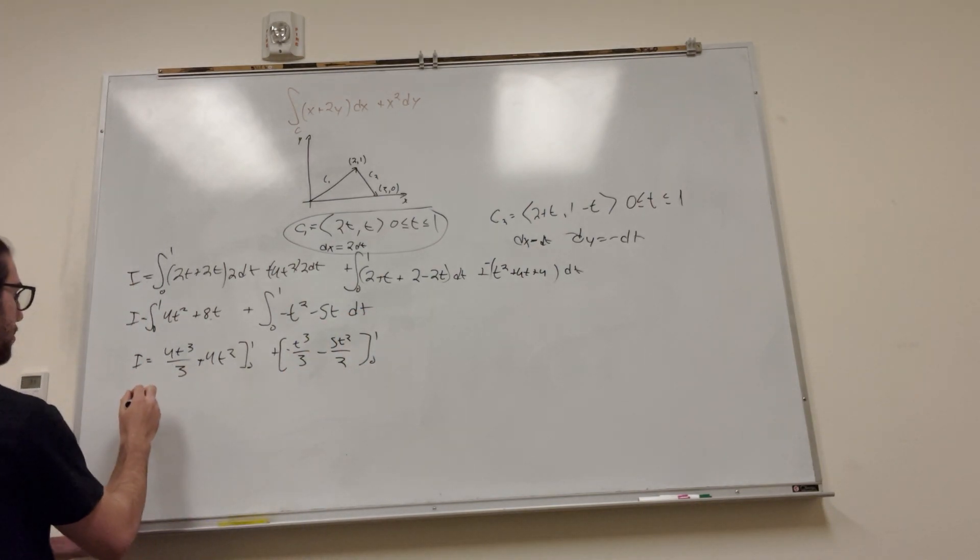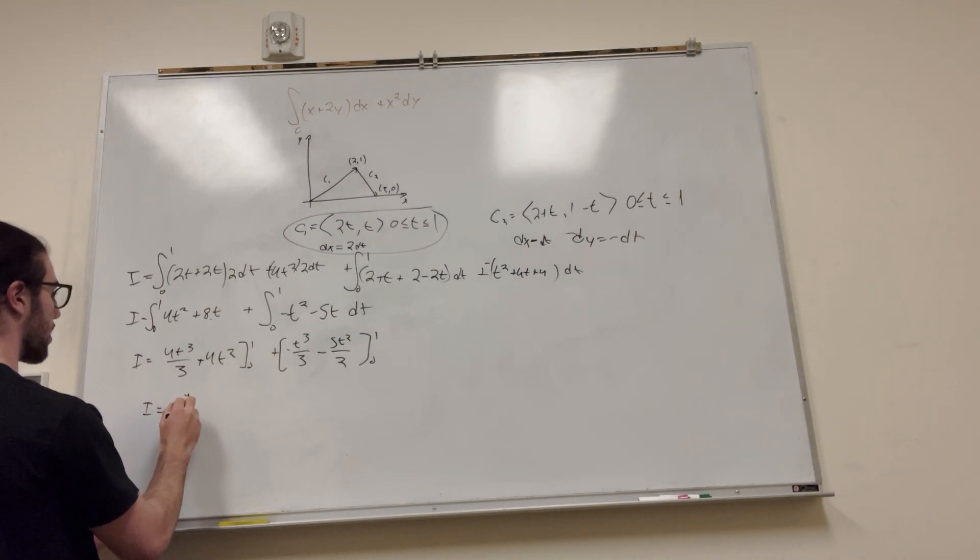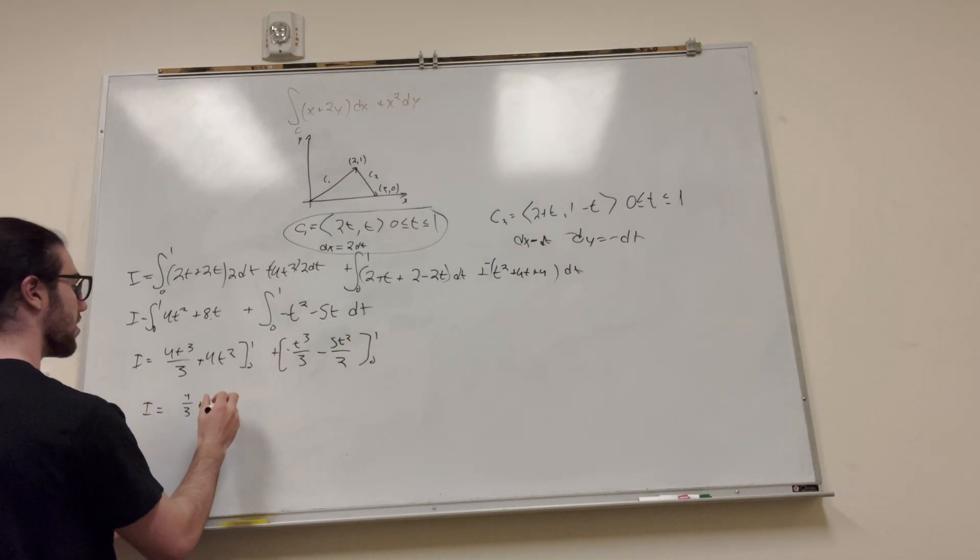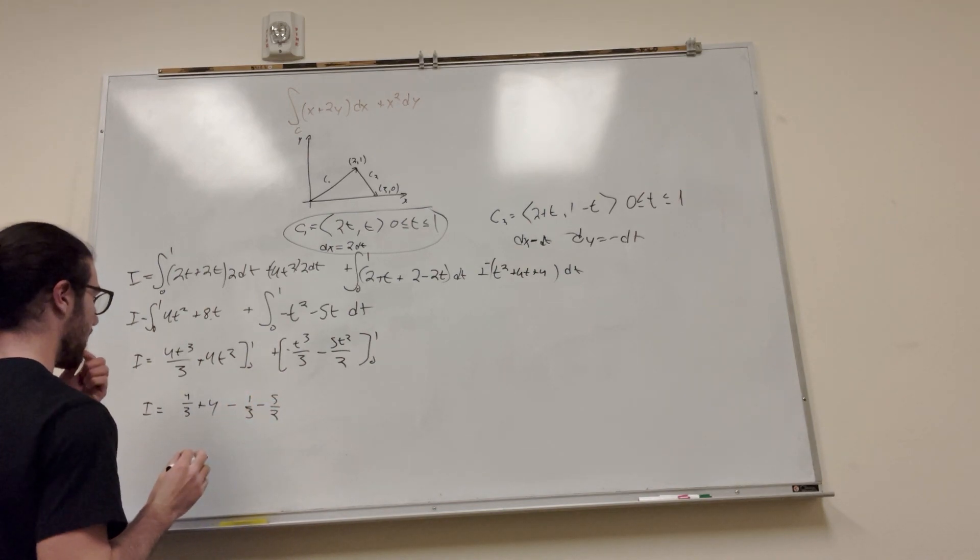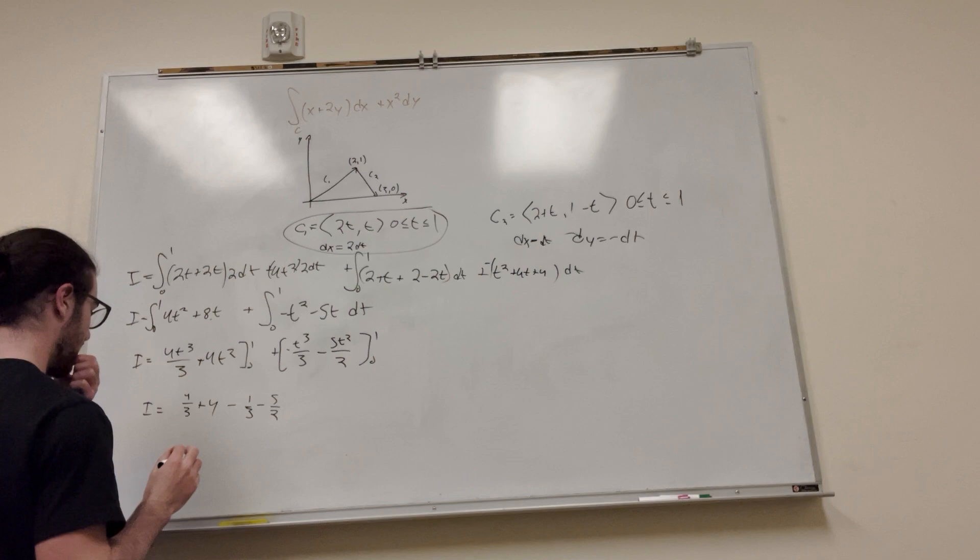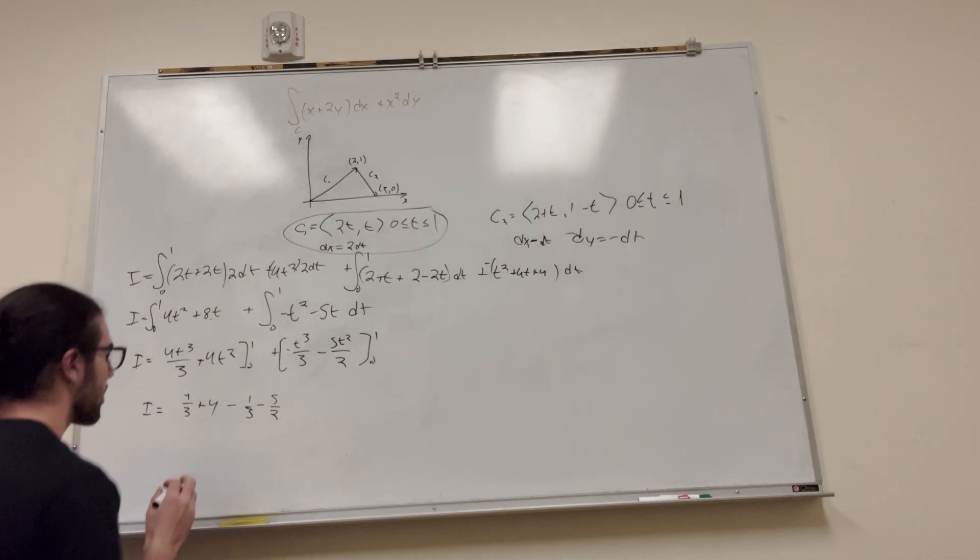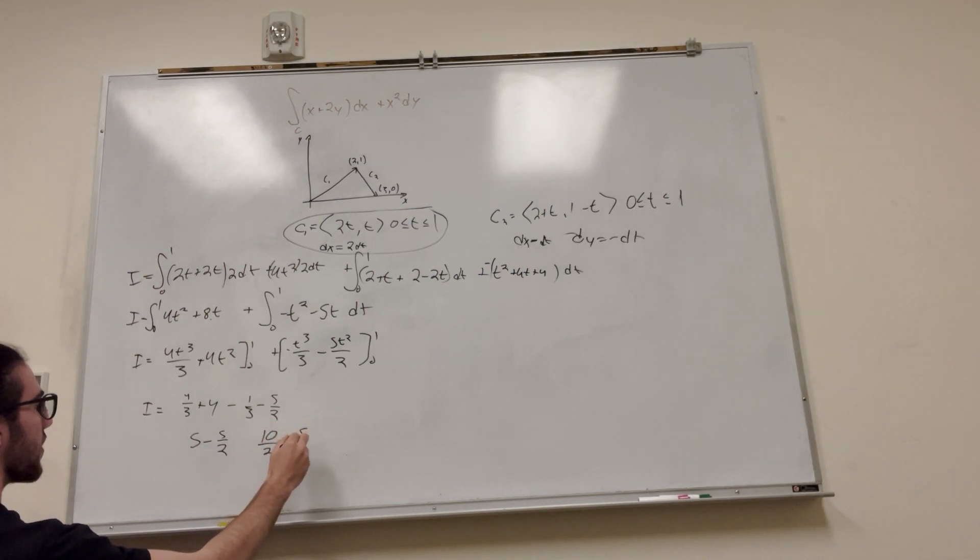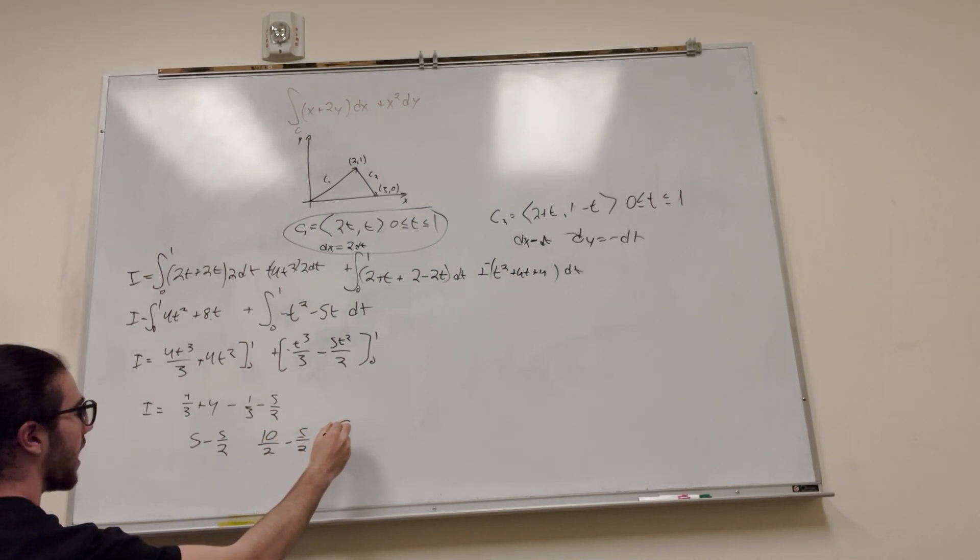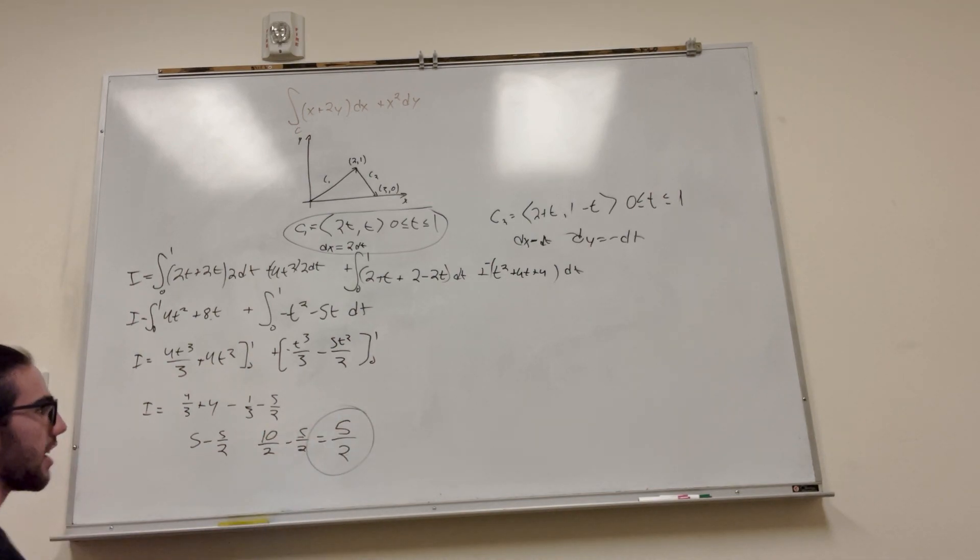Solving this some more. This is going to be 4/3 + 4 - 1/3 - 5/2. So it's going to be 5 - 5/2. This is going to be 10/2 - 5/2, which is just equal to 5/2. That's our answer right there.